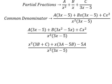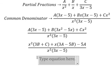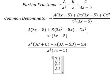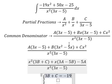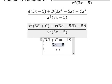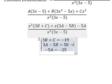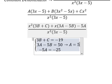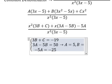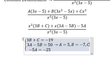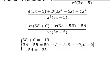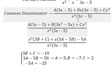Now we have the system of equations. We can find the solutions of A, B, C. A equals 5, B equals negative 7, and C equals 2.